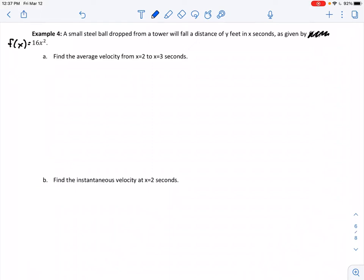In this video, we're going to practice finding the derivative using the four-step process, and also focus on interpretations of the derivative, which can be just as important as finding the derivative itself. We have a small steel ball dropped from a tower. It will fall a distance of y feet in x seconds as given by the function f(x) = 16x². In part a, we want to find the average velocity from x=2 to x=3 seconds.